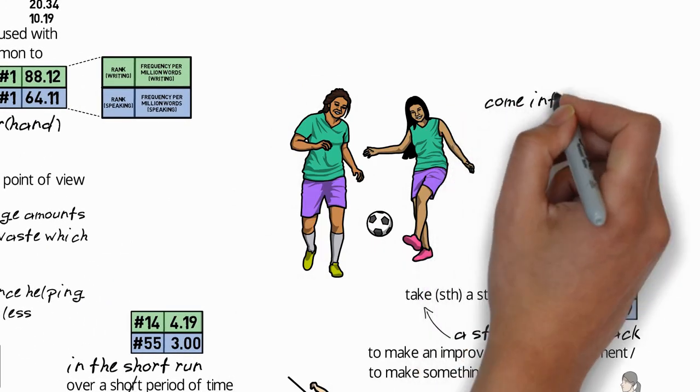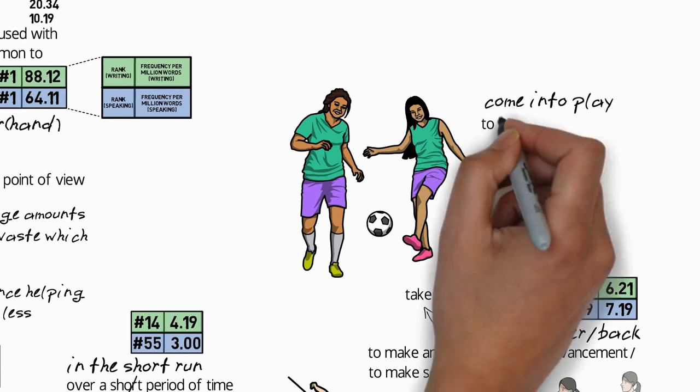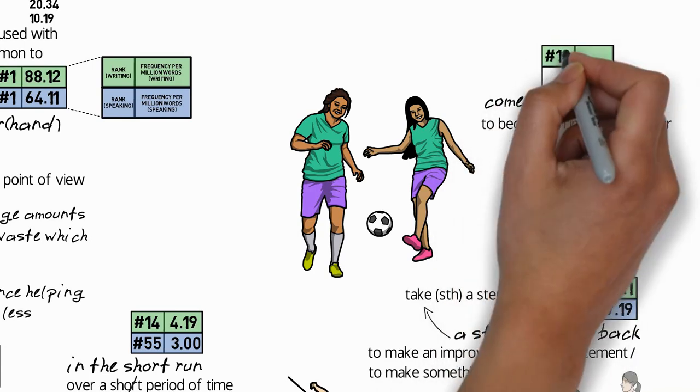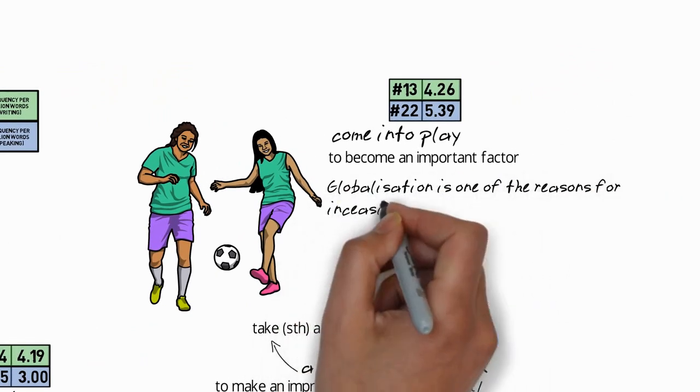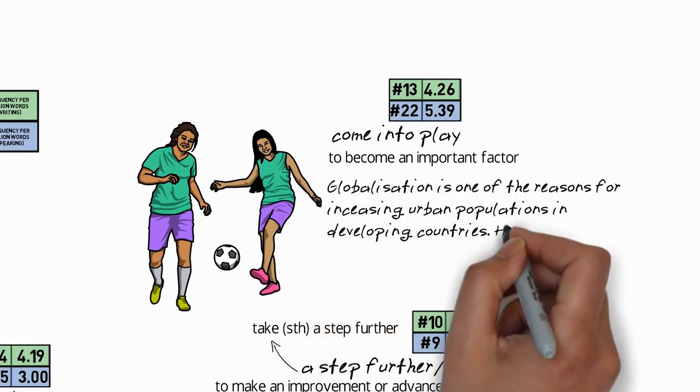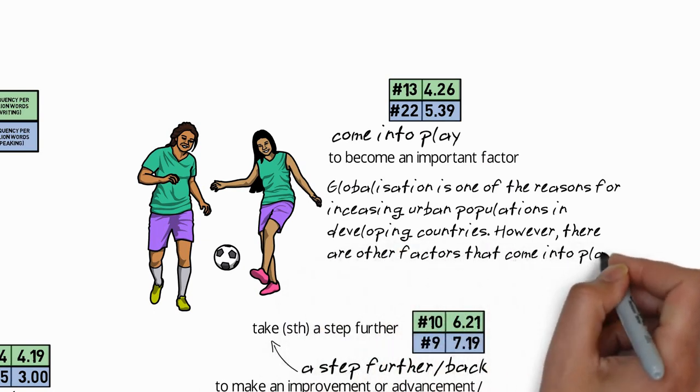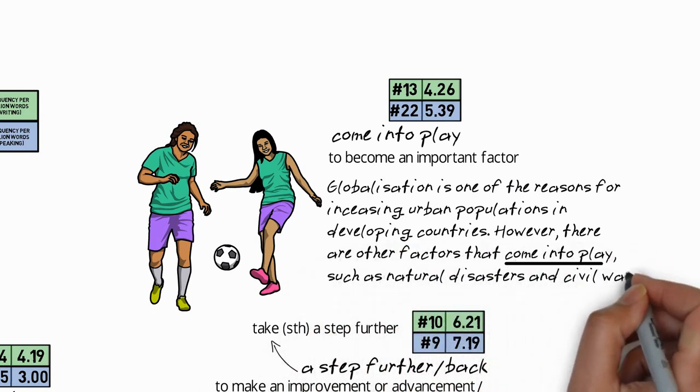The final action idiom is come into play, which means to become an important factor. For example, globalization is one of the reasons for increasing urban populations in developing countries. However, there are other factors that come into play, such as natural disasters and civil war.